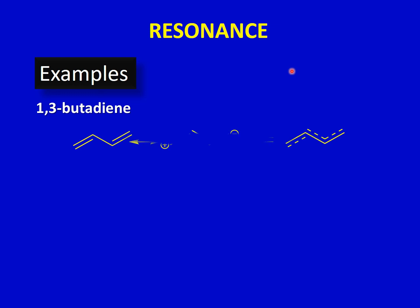1,3-Butadiene has four carbon atoms in its structure and two double bonds separated by a single bond. When we have a system with alternating double and single bonds, we say that the molecule is conjugated, and resonance is possible in such molecules.